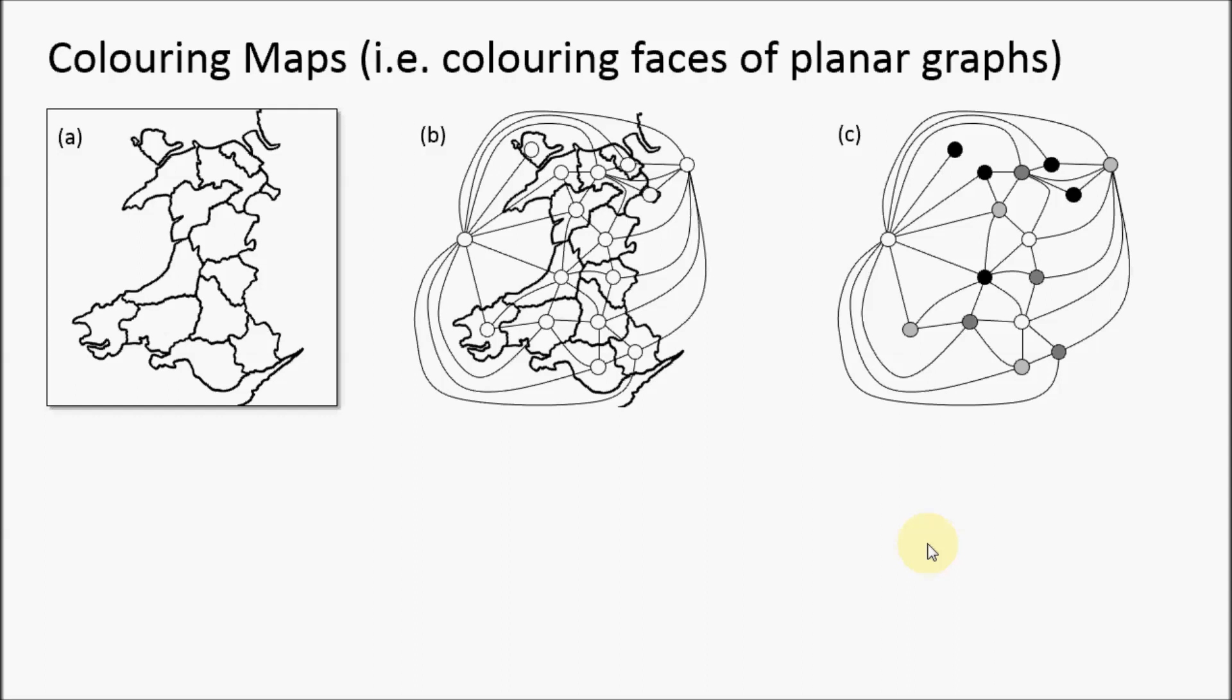Where does this relate to vertex coloring? Here we can see a map of Wales and England bordering on the right. What we do is in each region of this map, we place a vertex.